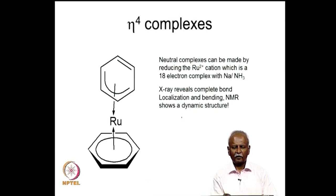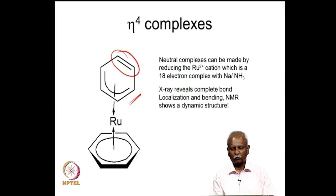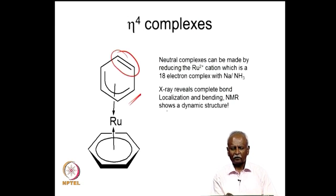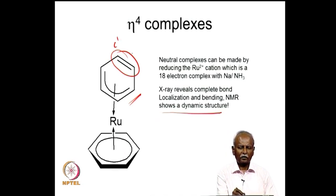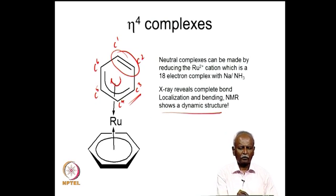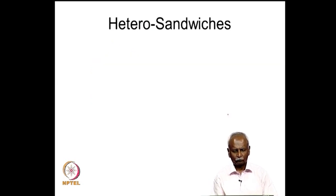The X-ray crystal structure of this molecule reveals that this double bond is completely moved away from the plane of the six-membered ring, so you do not have conjugation with the 4 pi electrons. The NMR structure, however, is dynamic - C1 and C2 rapidly interconvert with C3, C4, C5, C6 positions, with rapid rotation resulting in an NMR structure that suggests all carbons are equivalent.